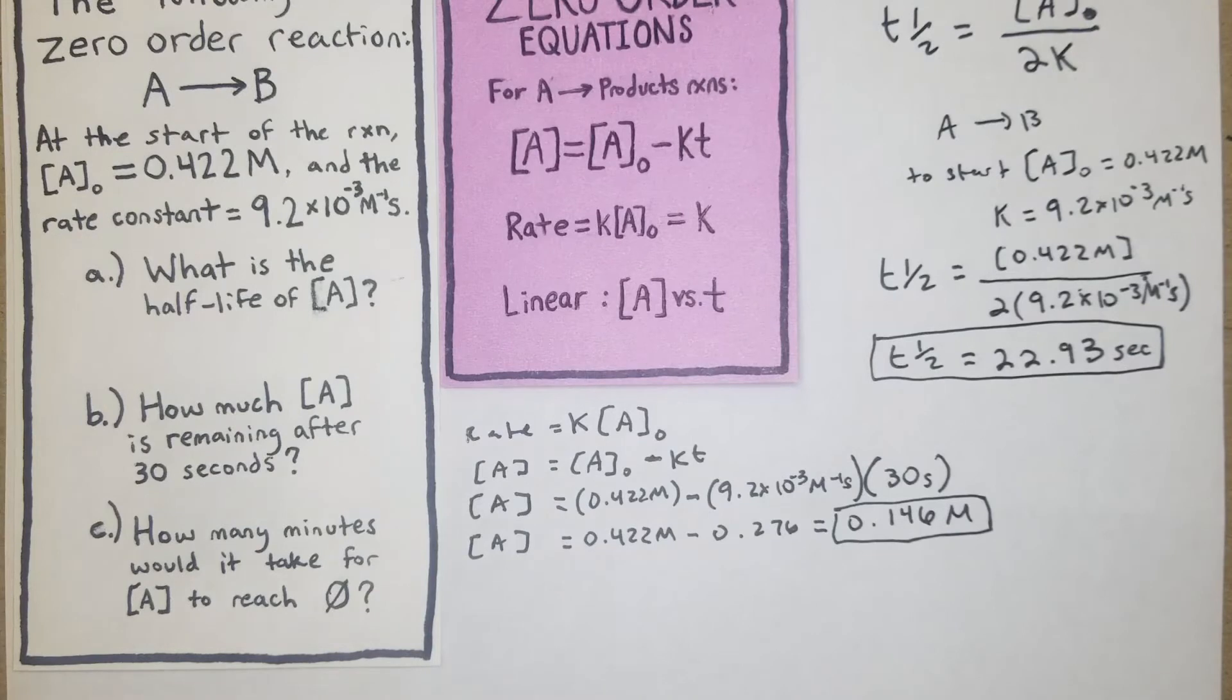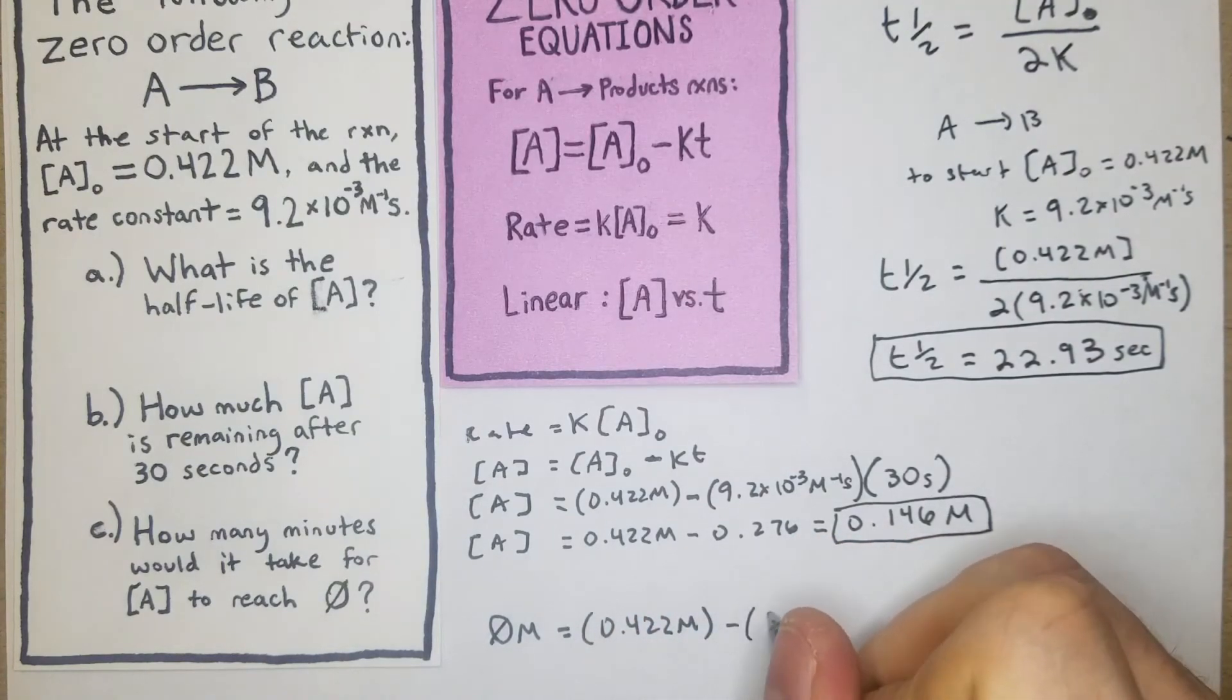I think this is a pretty common type of problem and I've seen this quite a lot. So really what we're going to do is we're going to set our concentration of A to 0. So 0.0 M equals we have the 0.422 M